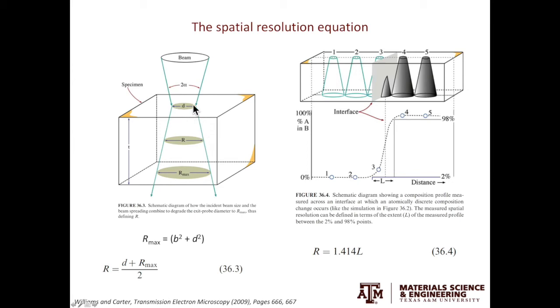Knowing B and D, you can calculate Rmax. D is the beam size, like how much you can converge the beam into a disk. Rmax is the beam size when exiting the bottom surface of the specimen. The resolution of EDS in TEM, R, is defined as the average of D and Rmax.